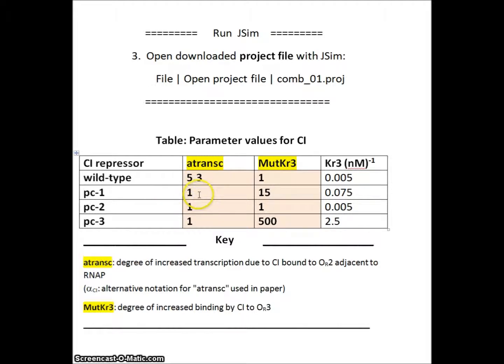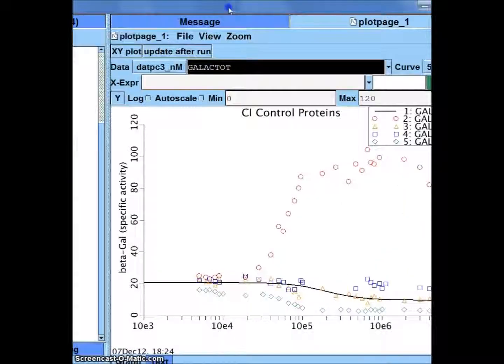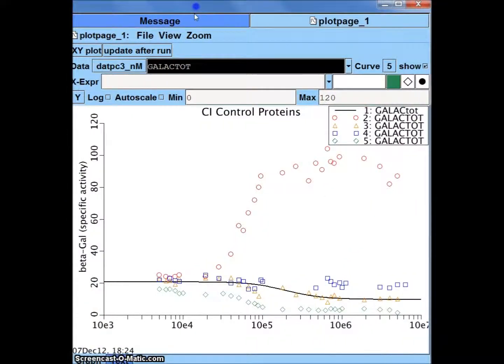Now let's model PC1. We're going to need a 1 and a 15. So we need 1 here and 15 times tighter binding. And click up the top, run. And our simulated curve now goes through the data points for PC1.